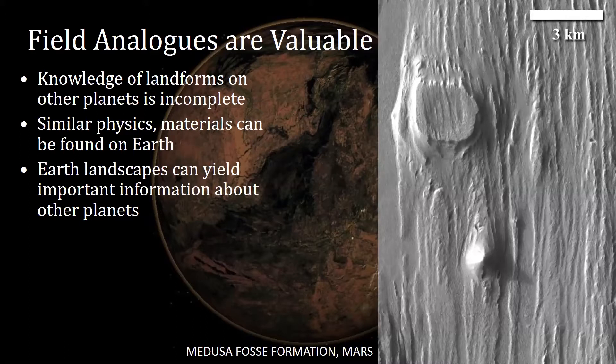On the right is a picture of some linear features on the surface of Mars, and we've come to understand that these striated landforms are formed by wind dominantly, and there are a lot of these on Mars. They occur there because Mars has been a wind-dominated landscape for billions of years, but it turns out we also have them on Earth.